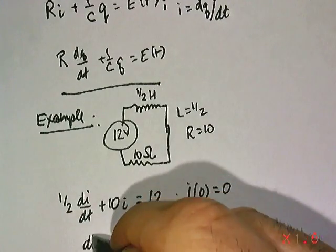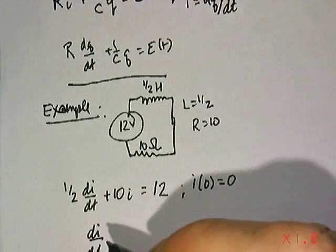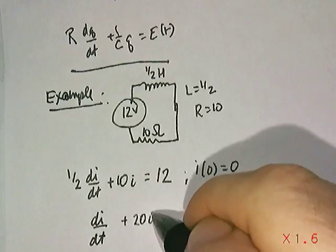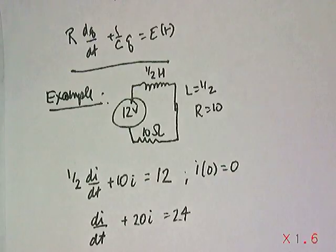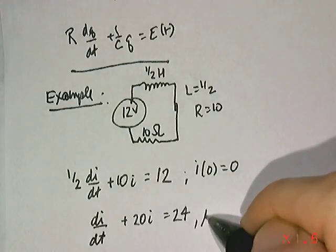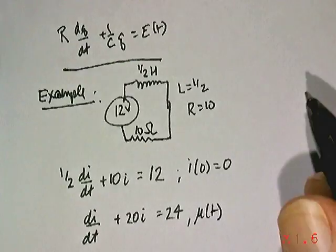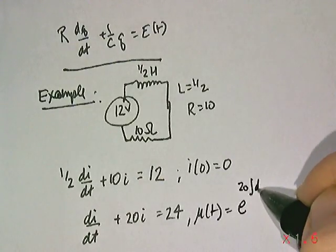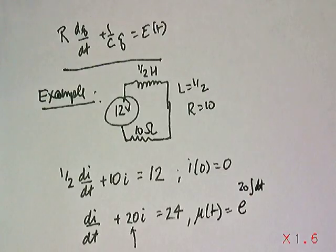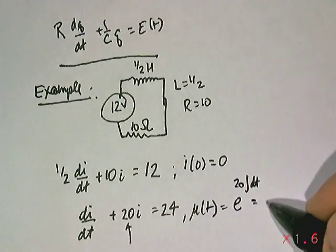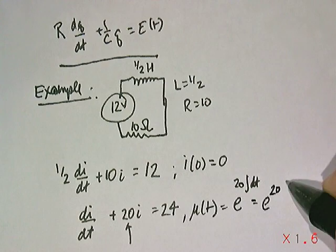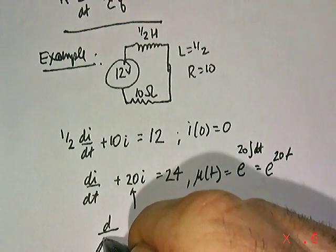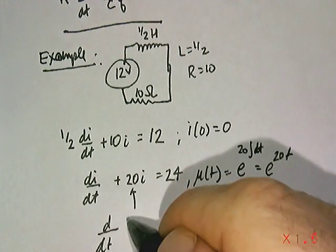Cleaning this up a little bit, you'd have that DI/DT plus 20I equals 24, just multiplying by 2. Use your integration factor of e to the 20 integral DT, because the P function there is just the constant 20. So your integrating factor is just going to be e to the 20T power. As we've done with solving linear differential equations with integrating factors.